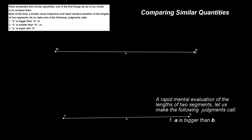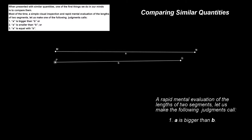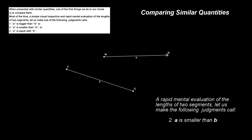Let's try to understand this concept. When presented with similar quantities, one of the first things we do in our minds is to compare them. Let's imagine we are shown two line segments, A and B. Most of the time, a simple visual inspection and rapid mental evaluation of the lengths of two segments let us make one of the following judgment calls.